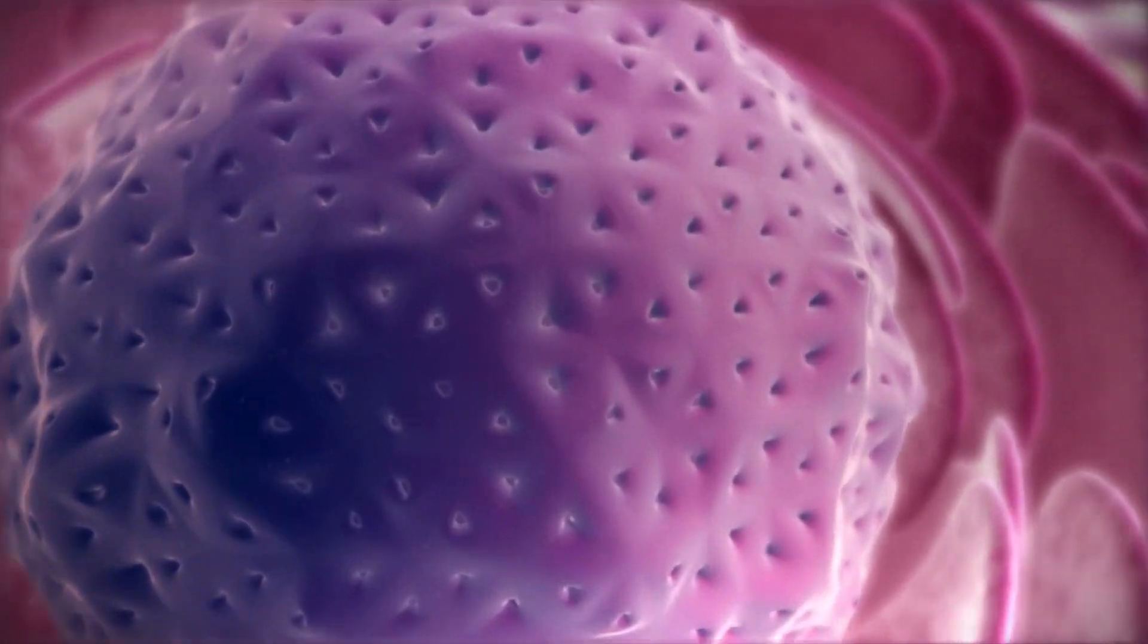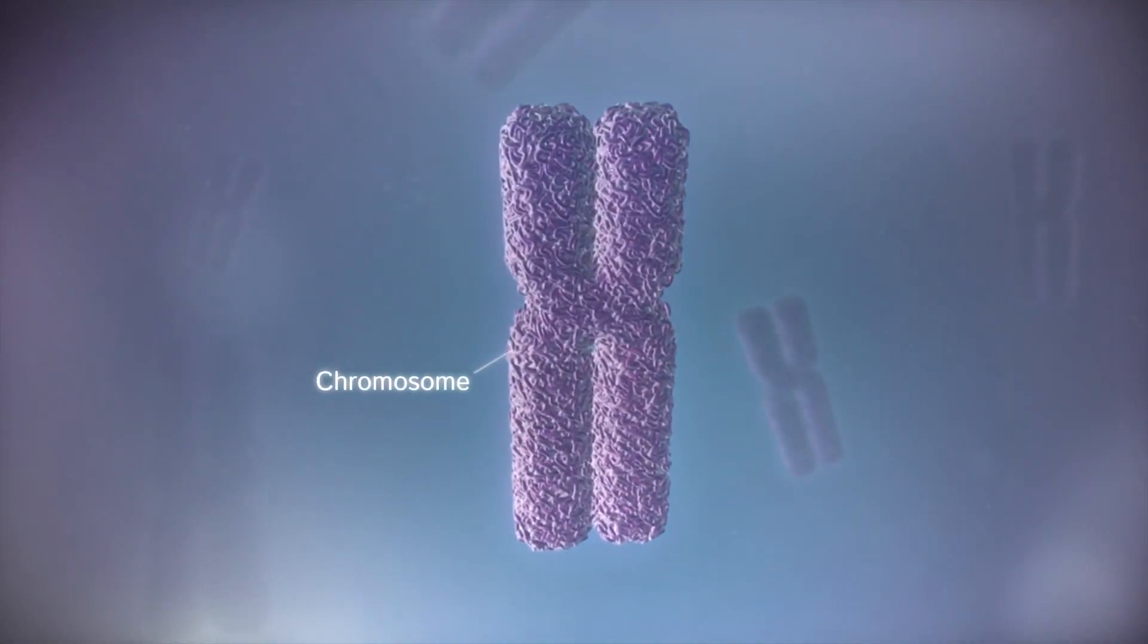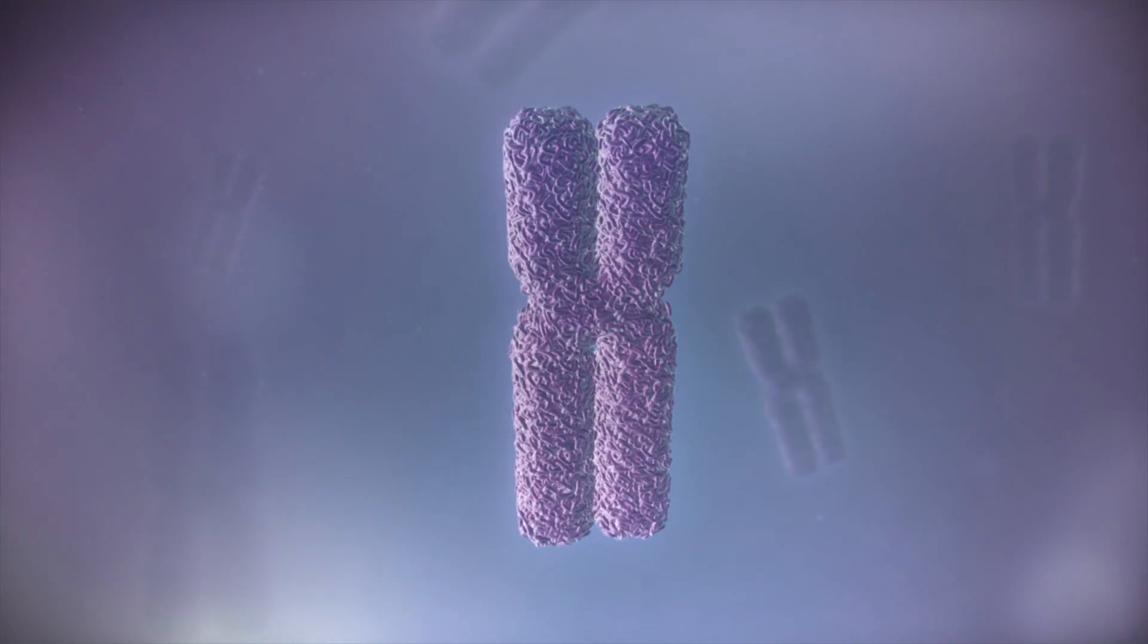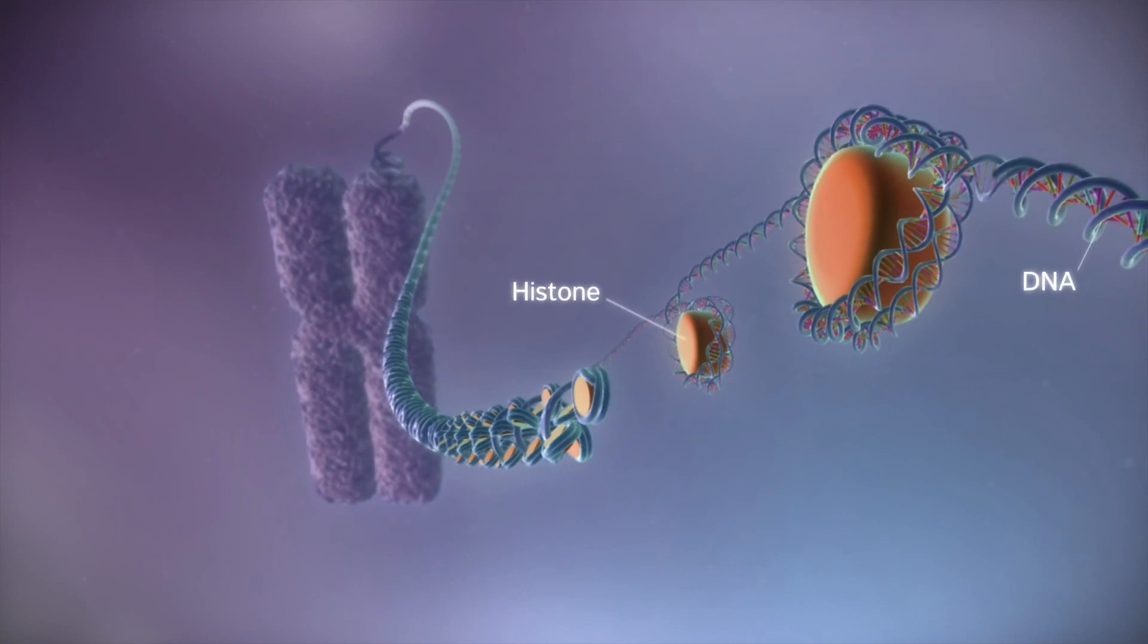In humans the genome is split between 23 pairs of chromosomes. Each chromosome contains a long strand of DNA, tightly packaged around proteins called histones.